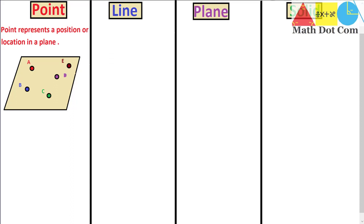So in this given plane we have multiple points: A, B, C, D, and E, and the points are represented by capital letters. We can say that in a plane we have multiple points and it is the fundamental object in geometry.